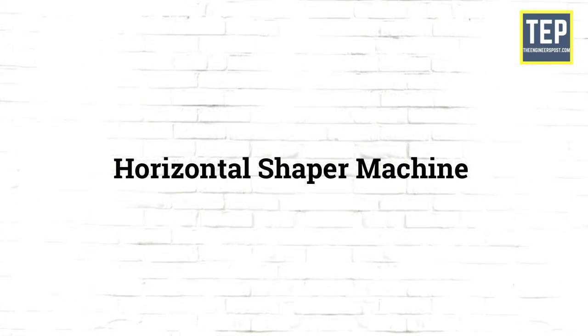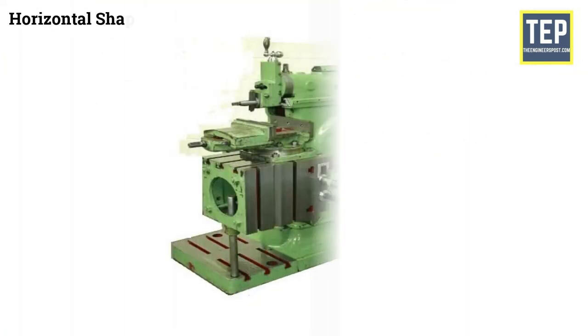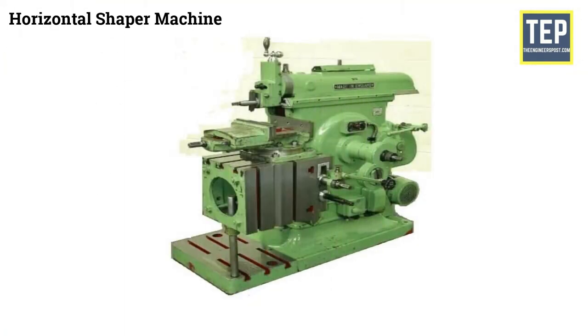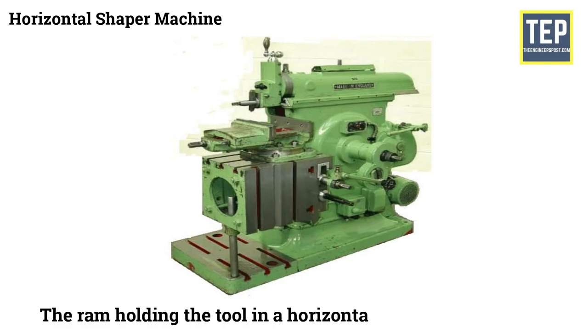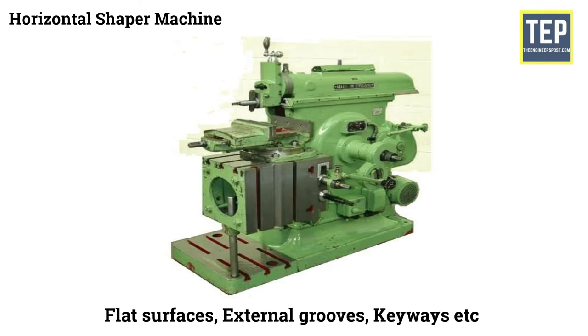Horizontal Shaper Machine: In these types of Shaper Machines the RAM holding the tool in a horizontal axis and reciprocate. This type of Shaper is using for the production of flat surfaces, external grooves, keyways etc.